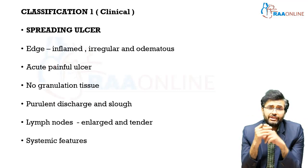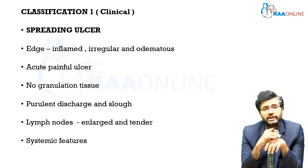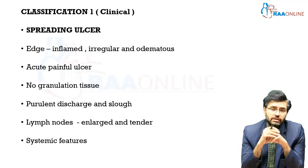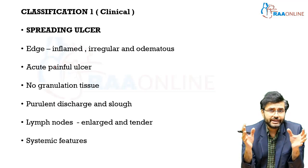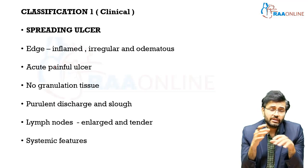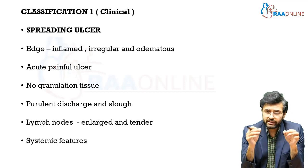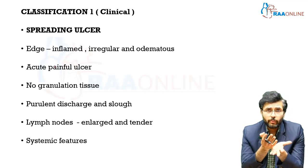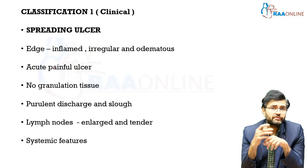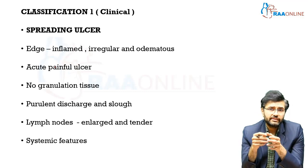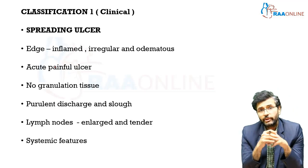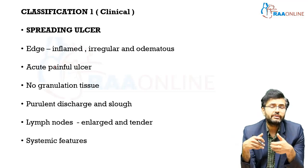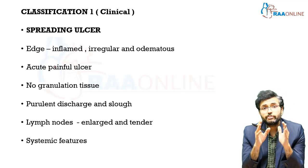Ulcers can be classified based on clinical examination into three types. The first is a spreading ulcer, which has inflamed, irregular edges and is edematous. These are characteristically painful ulcers with acute onset, no granulation tissue, and a floor formed by slough with purulent discharge. Because of the active infection, regional lymph nodes enlarge and the patient has systemic manifestations like fever and malaise.